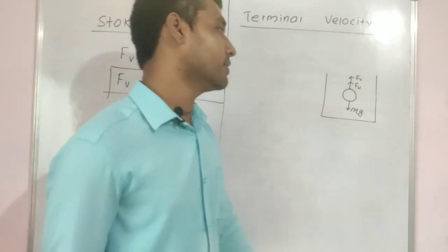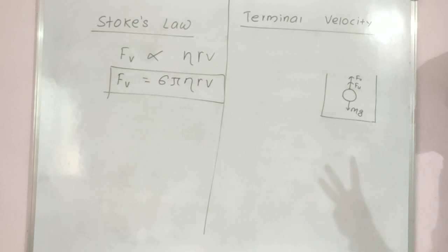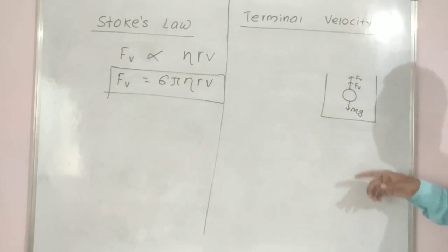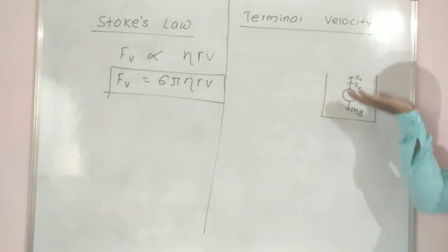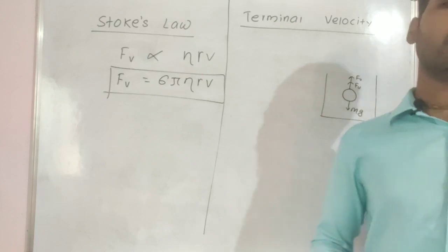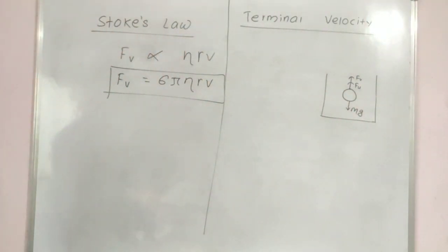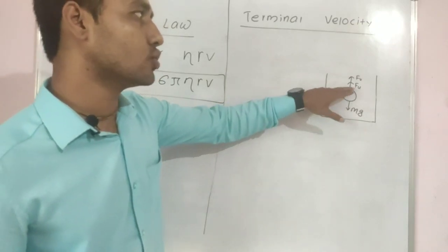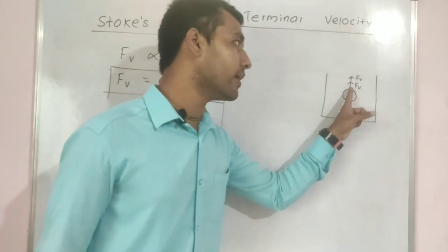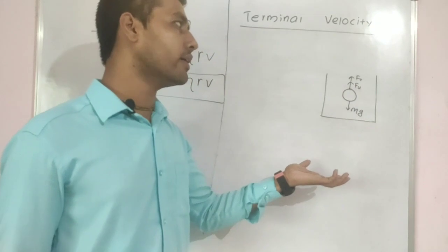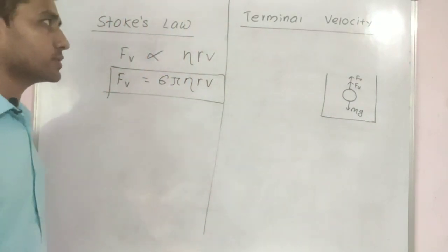When a spherical object is falling down in a given viscous fluid, three forces act on it specifically. One force is the downward force which is the weight of that object — the gravitational force. There are two upward forces: one is the viscous force Fv, and the other is the upthrust Fu. So one downward force mg and two upward forces: Fu (upthrust) and Fv (viscous force).